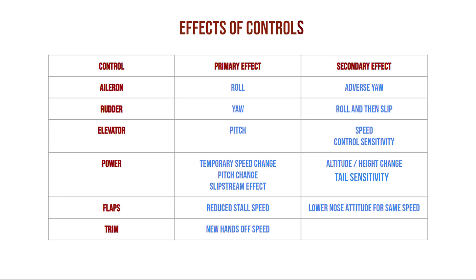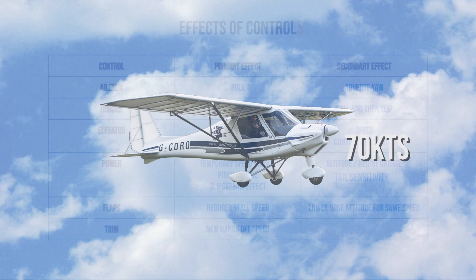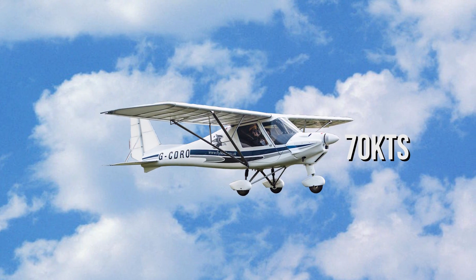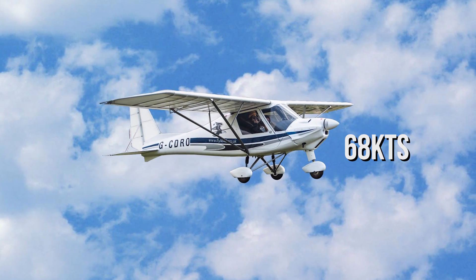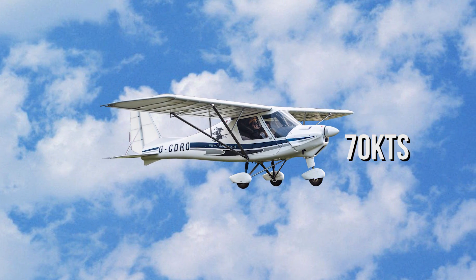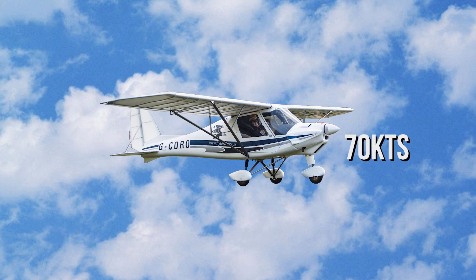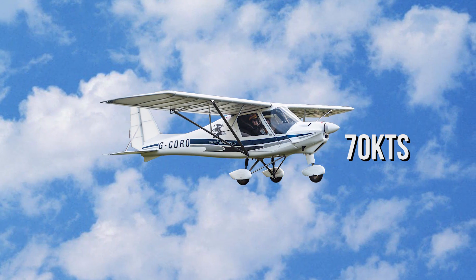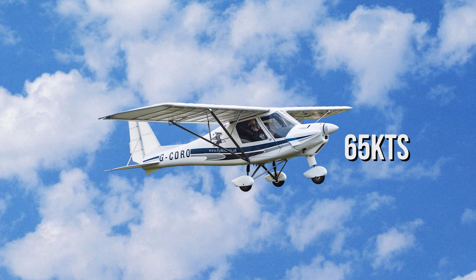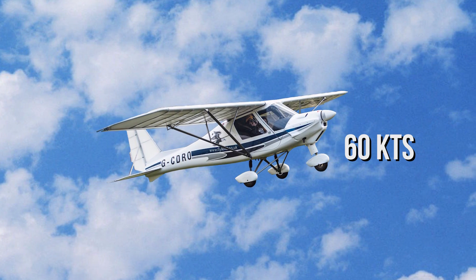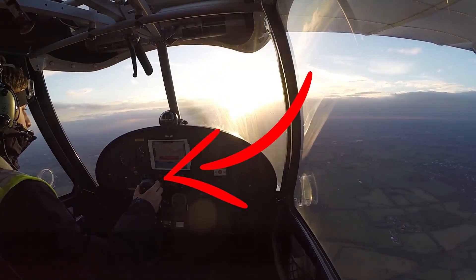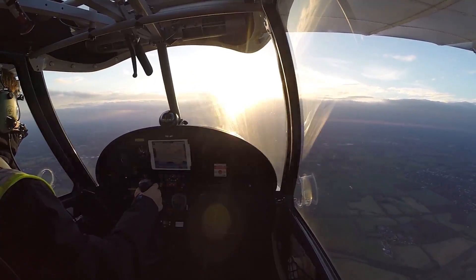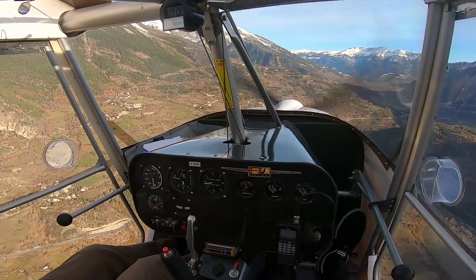Trim is our kind of cruise control. We use the trim to give us a new hands-off speed. If we are flying along at 70 knots and want to reduce our airspeed to 60 knots, we raise the nose. The airspeed will reach 60 knots. However, if we haven't trimmed, when we let go of the stick, the nose will fall and the aircraft will accelerate to 70 knots again. If we trim the nose up, the aircraft would stay at 60 knots. The trim control is located on top of the stick, with a button for trimming the nose up and for trimming the nose down. The trim tab itself is on the left elevator and is electronically controlled.